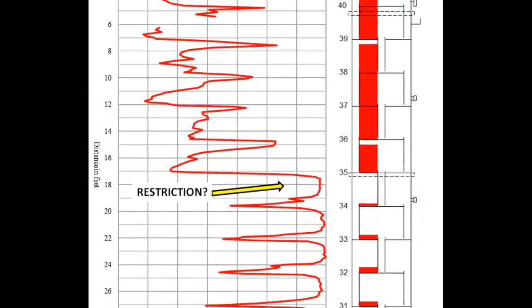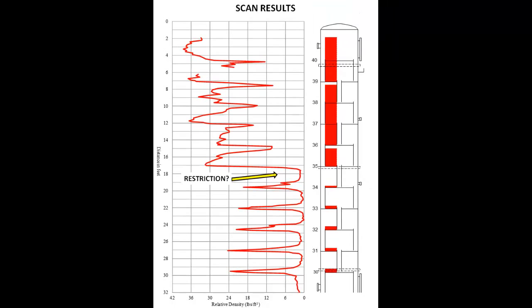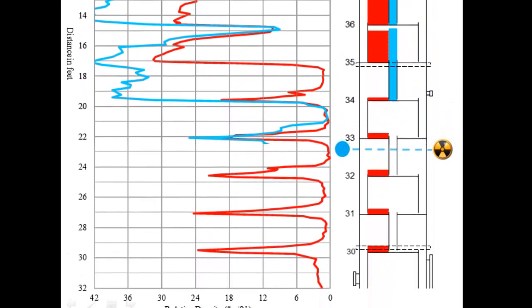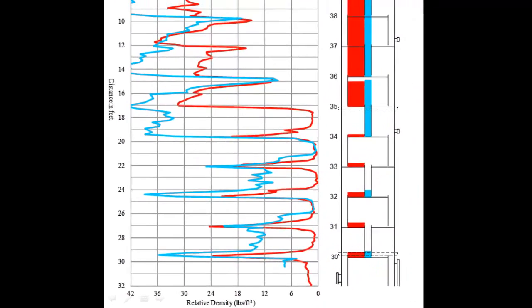In order to confirm that suspicion, the gamma scan was performed through the center downcomers. The source and detector were lowered down the tower, this time oriented through the center downcomers, and the results are shown here in blue.